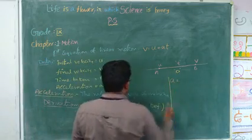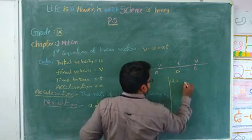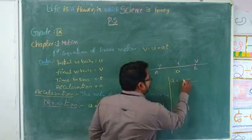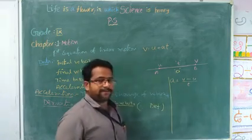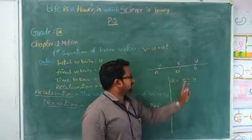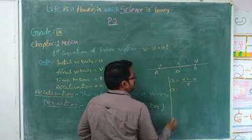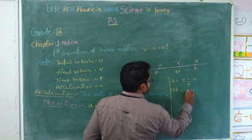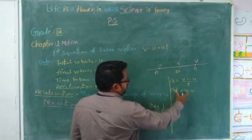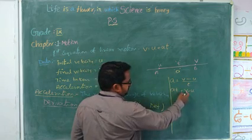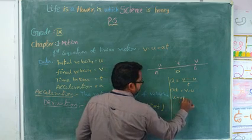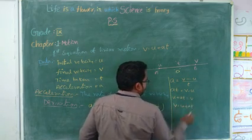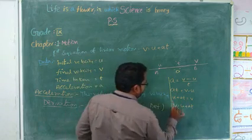A is equal to change in velocity by time. Difference in velocity means V minus U, divided by time T. So A is equal to V minus U by T. By cross multiplication, A into T is equal to V minus U. Writing V as the subject: U plus AT is equal to V, or V is equal to U plus AT. This is known as the first equation of linear motion.